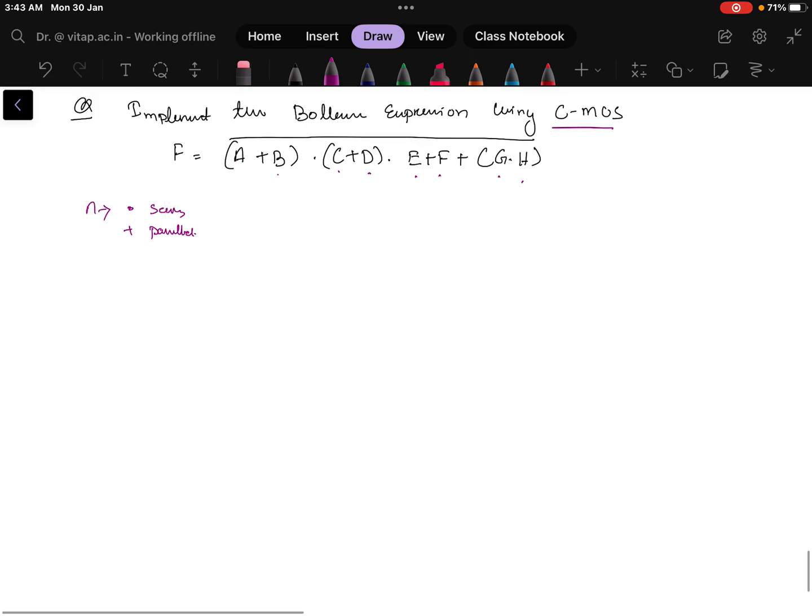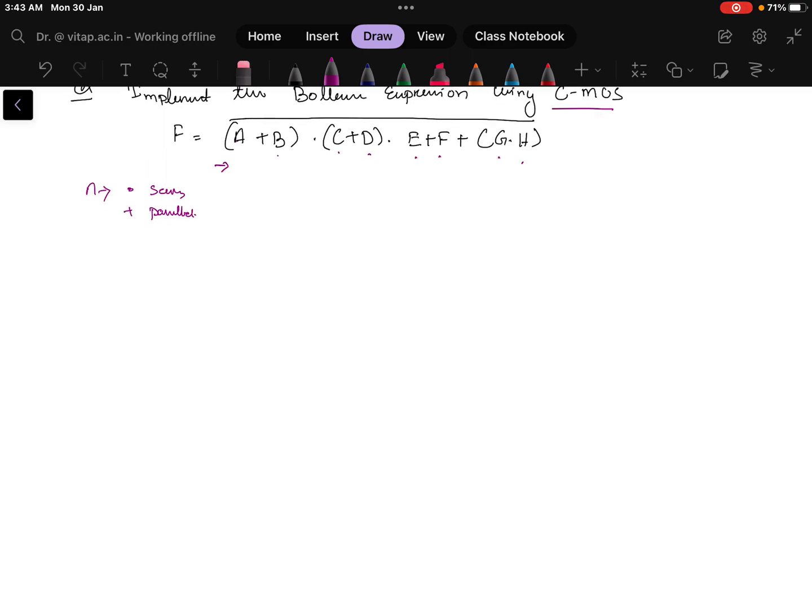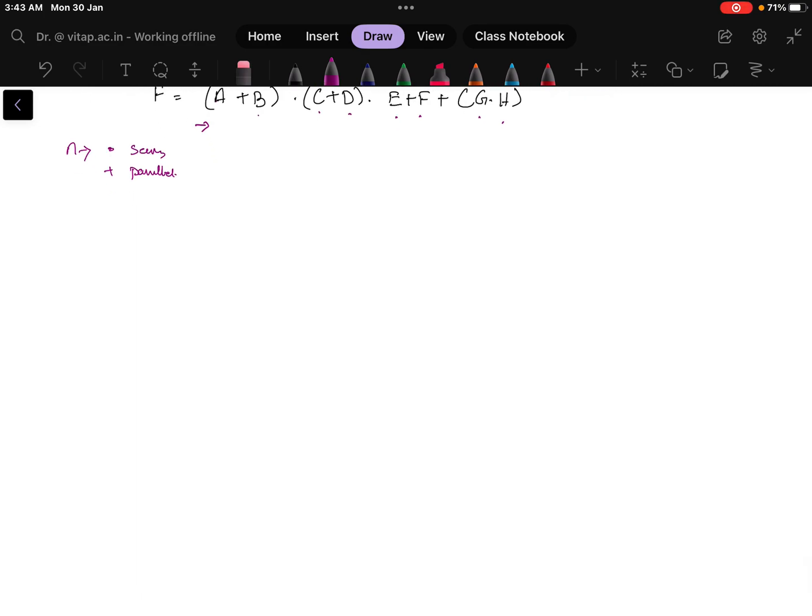First how to solve it? First you start from this side. One plus one plus one you go on adding this. First is what? A plus B I have to do. A plus B means what? It will be in parallel. Let me draw it here. If I draw it I will draw it below, so that the PMOS I can draw upside. I will take this is my A and one parallel with this I will take. This is my B and they are connected in parallel.